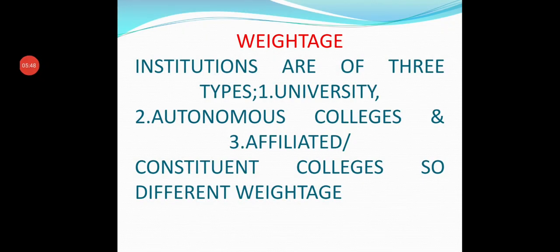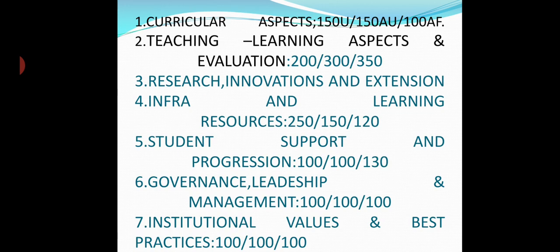Depending upon the type of institution — whether university, college, autonomous or affiliated — weightage differs. Here U stands for university, AU for autonomous institution, and AF for affiliated. Accordingly, weightage is: for the first criterion — 150, 150, 100 and so on for the second, third, fourth, fifth, sixth, and seventh criteria. For the second criterion, affiliated institutions carry heavy weightage, that is 350.